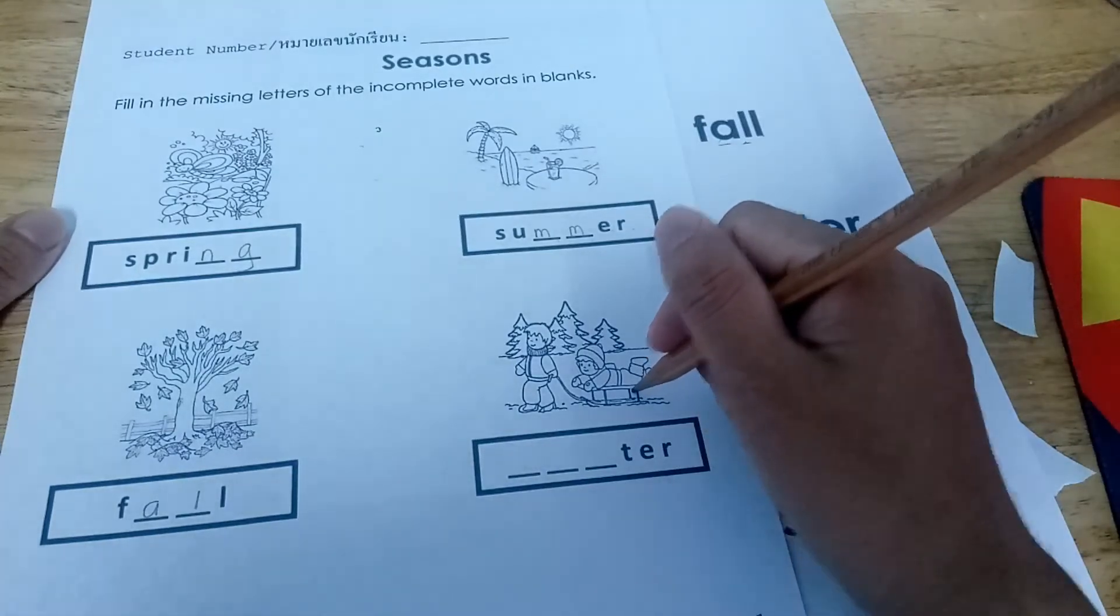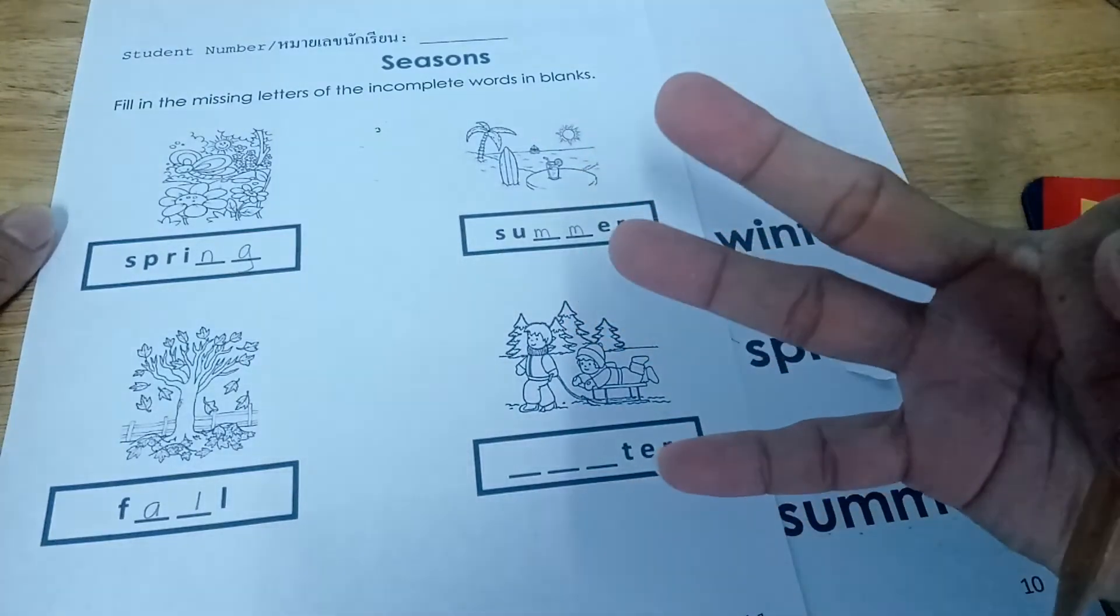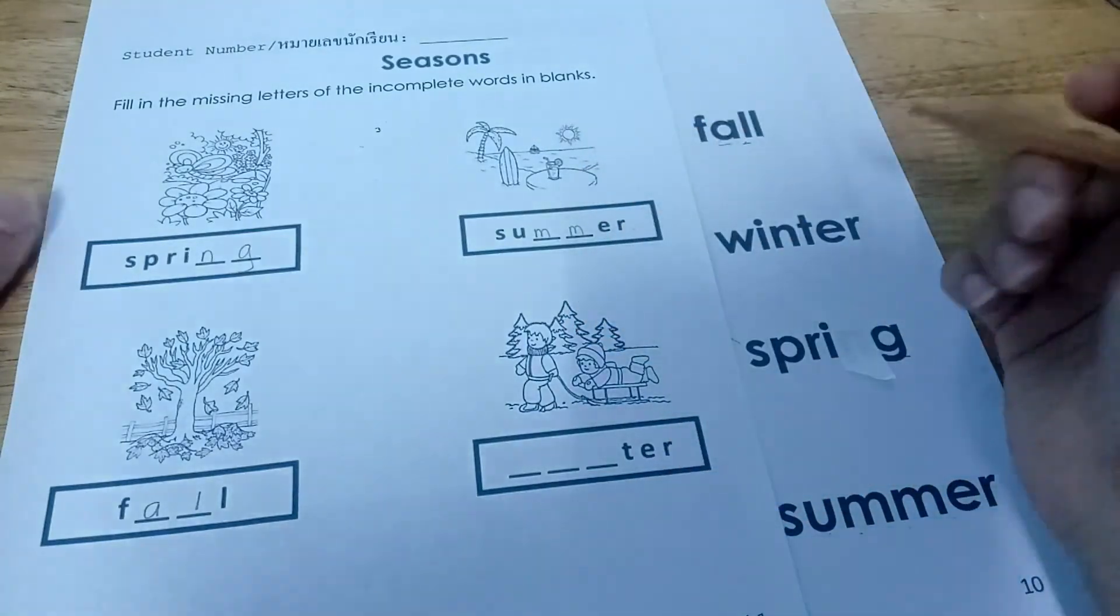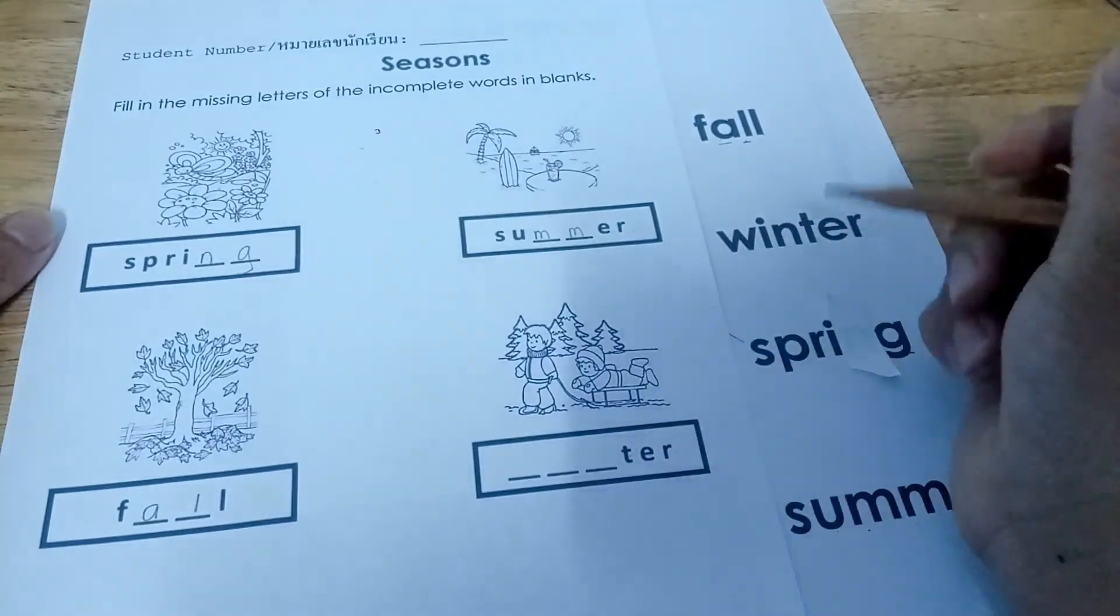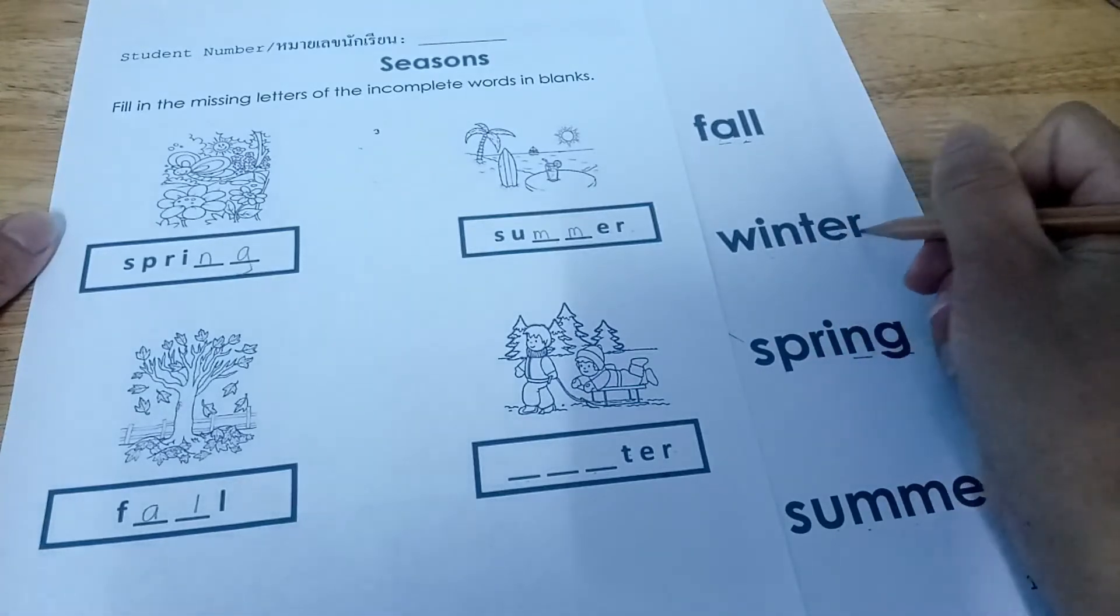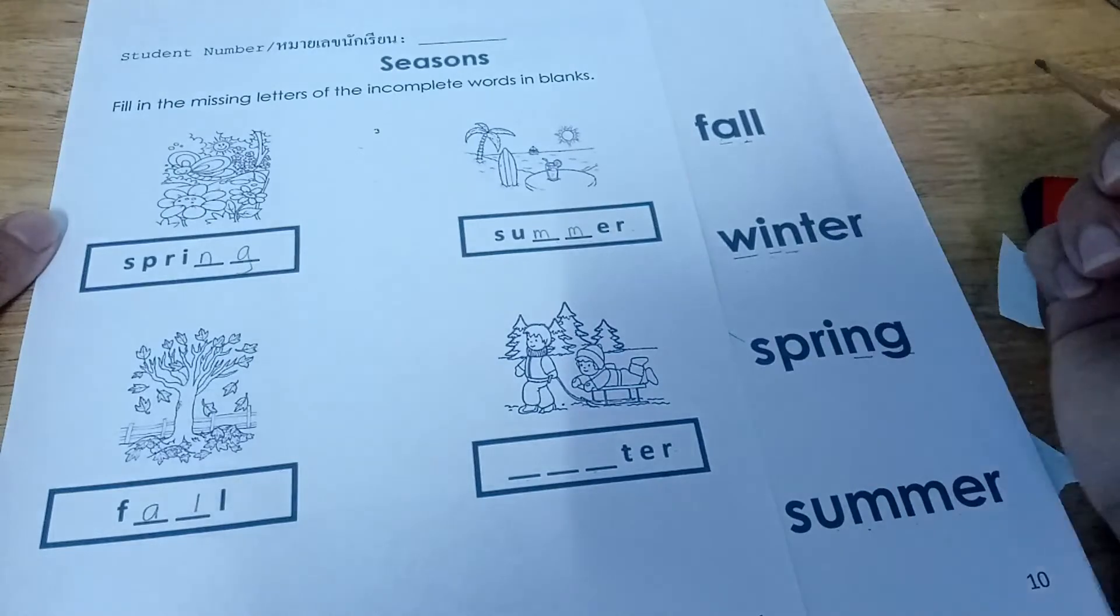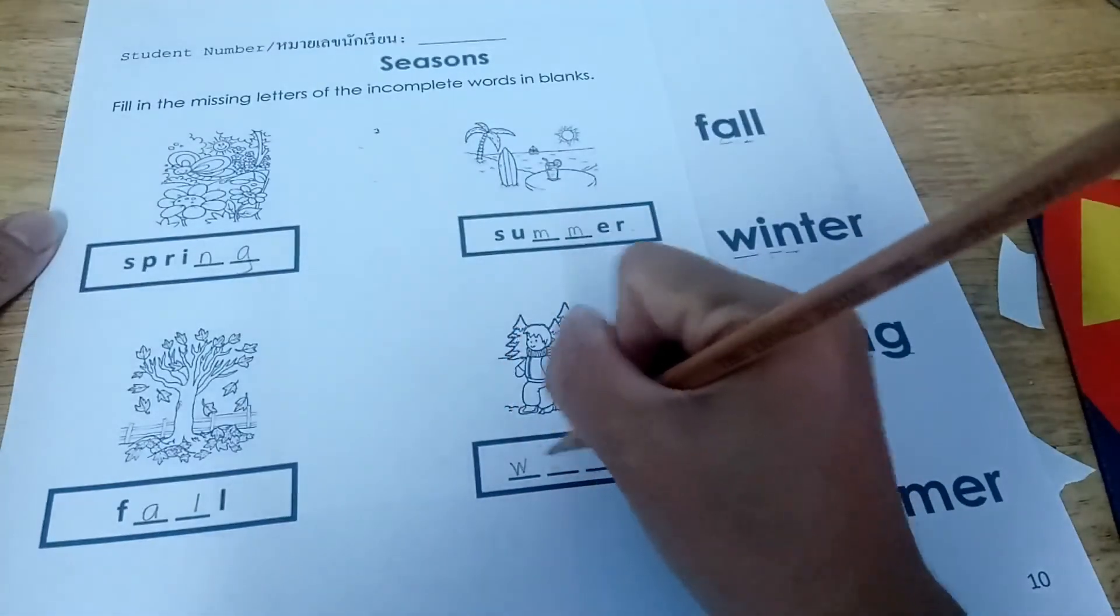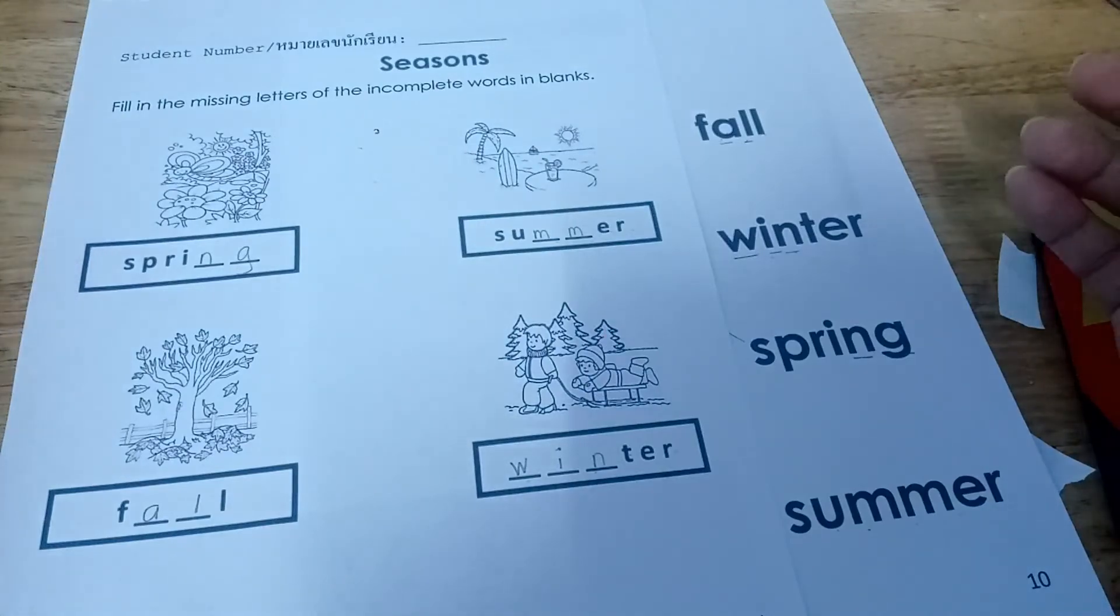Again, winter. What are the missing letters? There are three missing letters. Okay, blank, blank, blank, T-E-R. Okay, which one here? Blank, blank, blank, T-E-R. So, it is W-I-N. Okay, the W-I-N. Okay, that's it.